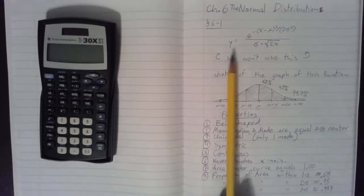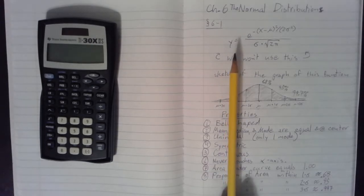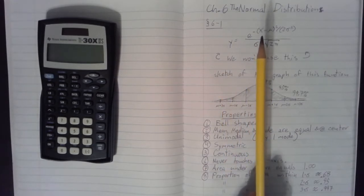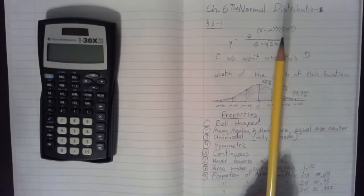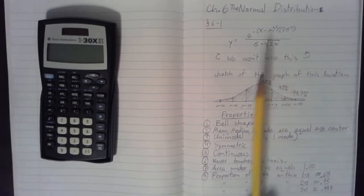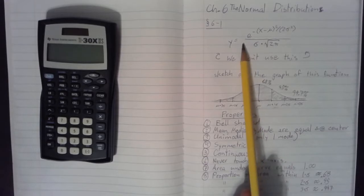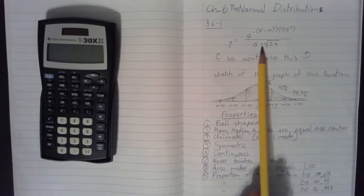So, we will first consider this mathematical equation where we obtain a y value by setting that equal to e to the negative x minus mu squared, all divided by 2 times sigma squared. And then all of that exponential expression is all divided by sigma times the square root of 2 pi.